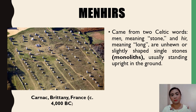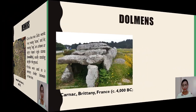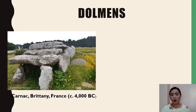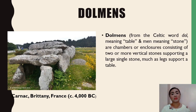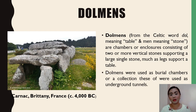Menhirs were used by the people as territory dividers between communities. The second type of megalithic art is the Dolmen, from the Celtic word dol meaning table, and men meaning stone. These are chambers or enclosures consisting of two or more vertical stones supporting a large single horizontal stone — much as legs support a table. An example of a Dolmen can also be found in Carnac, Brittany, France. Dolmen were used as burial chambers, or a collection of them was used as underground tunnels.